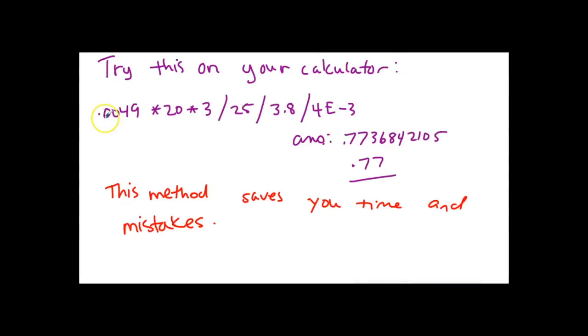Just 0.0049, the times key, 20 times 3, no parentheses. You don't need any parentheses to do this method. Then you're dividing all that by 25, so the division symbol on your calculator.